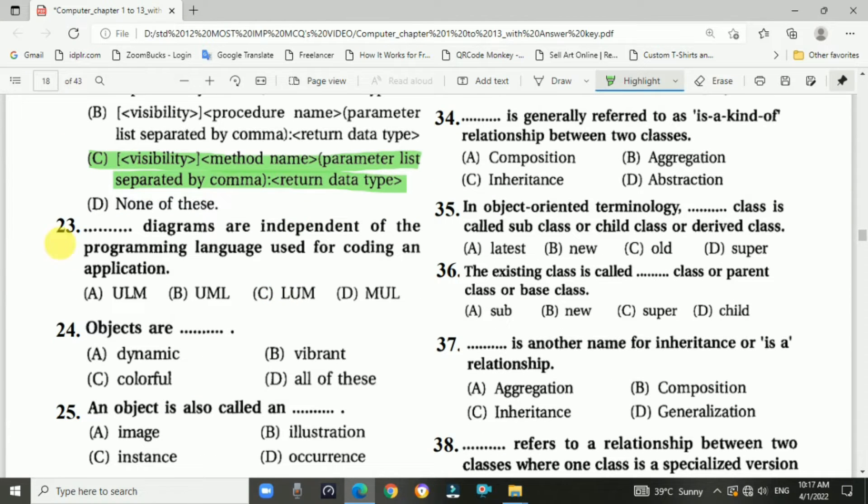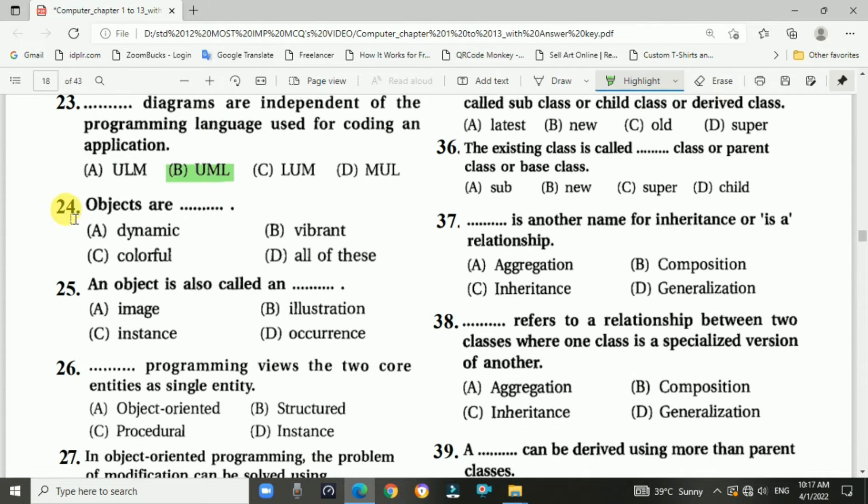Question number twenty-three: Blank diagrams are independent of the programming language used for coding an application. Answer is B, UML. Question number twenty-four: Objects are blank. Objects are dynamic, option A.